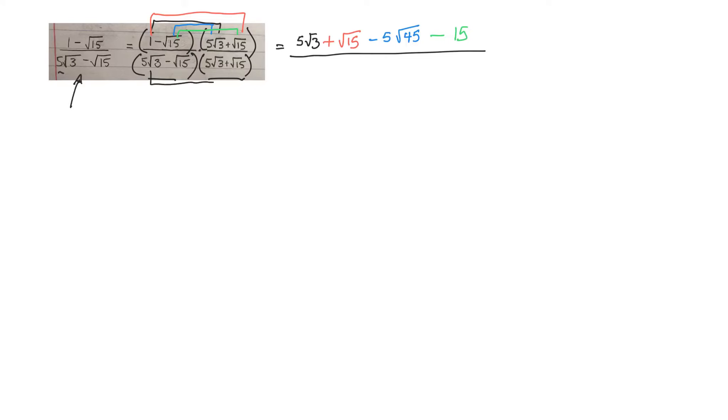So 5 root 3 times 5 root 3 will be 25 root 9, which I can simplify. I'll do that later. 5 root 3 times root 15. So plus 5 root 45.